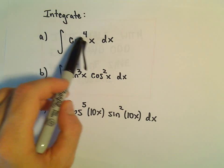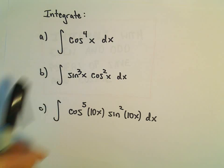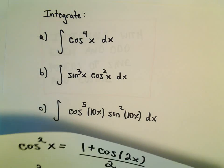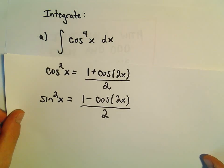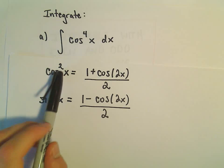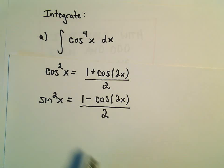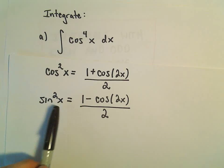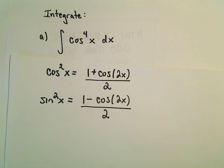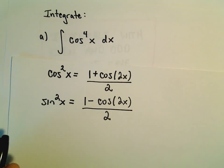So to integrate this, whenever you have even powers of sine and cosine only, so no odd powers floating around, we have to make use of these identities. Recall we can write cosine squared x as 1 plus cosine of 2x over 2, and we can write sine squared x as 1 minus cosine 2x over 2. So almost the same identities.